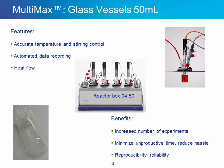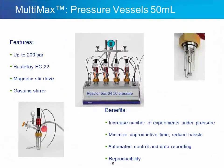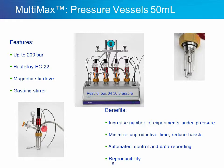Taking a closer look at the 4 by 50 mL vessel system: it offers very accurate temperature and strain control with several impeller options, automated data logging and parameter control, and calorimetry is also available. The same Multimax technology and equipment allows to accommodate pressure vessels. They are made out of Hastelloy HC-22 and can stand pressure up to 200 bar. These vessels feature a magnetic stir drive and are outfitted with a gassing stirrer. Pressure control can be either fully manual or fully automatic in each individual vessel using a pressure controller.